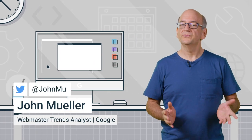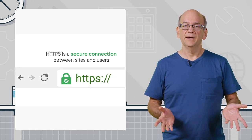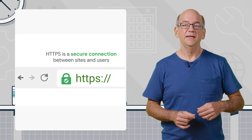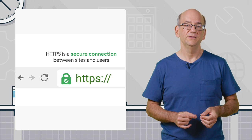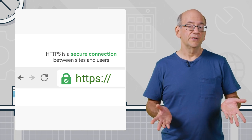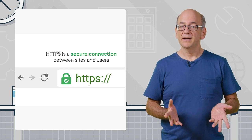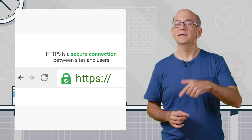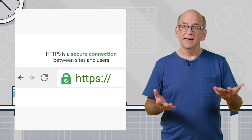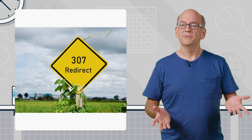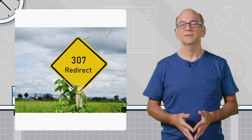307 redirects are generally not real redirects. When you make a site HTTPS, you can optionally use HSTS. HSTS tells users to only get the HTTPS version of a page, so when a user enters a URL or clicks on a link that would otherwise go to HTTP, the browser remembers the HSTS and goes directly to the HTTPS version. To make it clear what's happening, it acts like there was a redirect. Chrome calls this a 307 redirect. So if you use Chrome and you see a 307 result code with a tool, it's not really there.